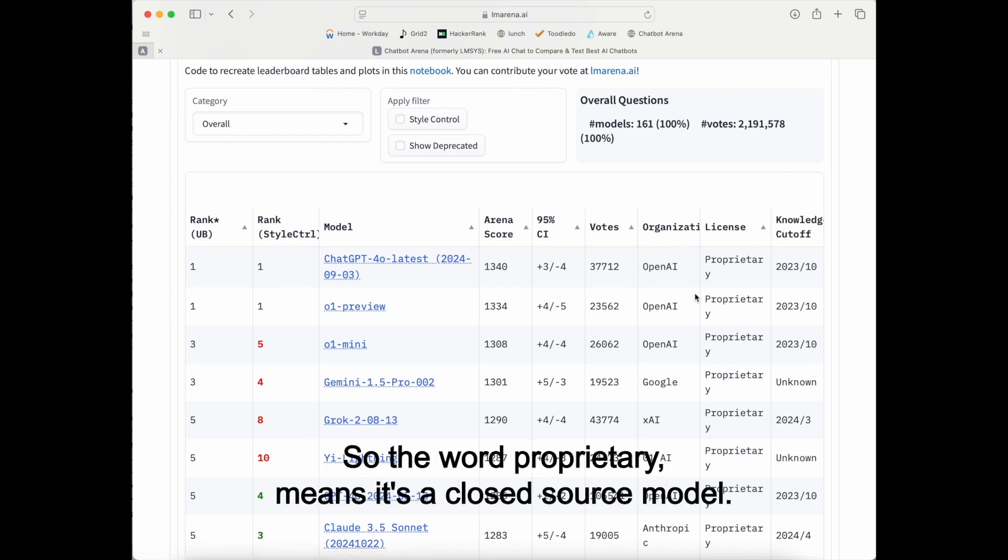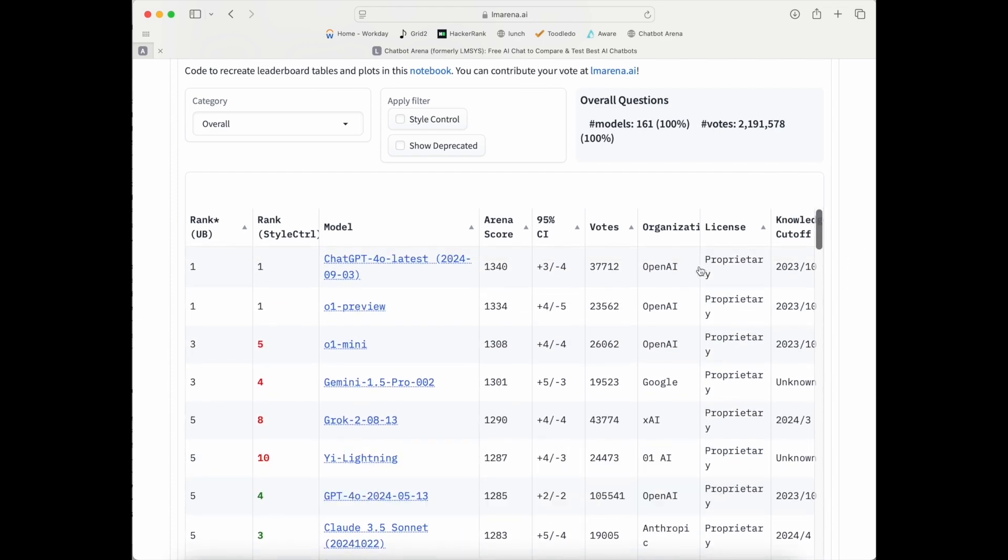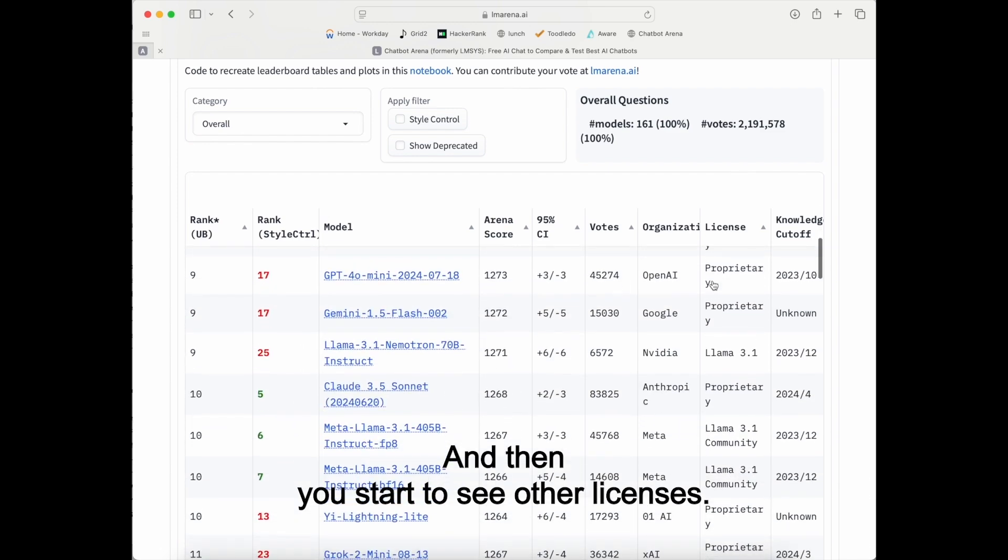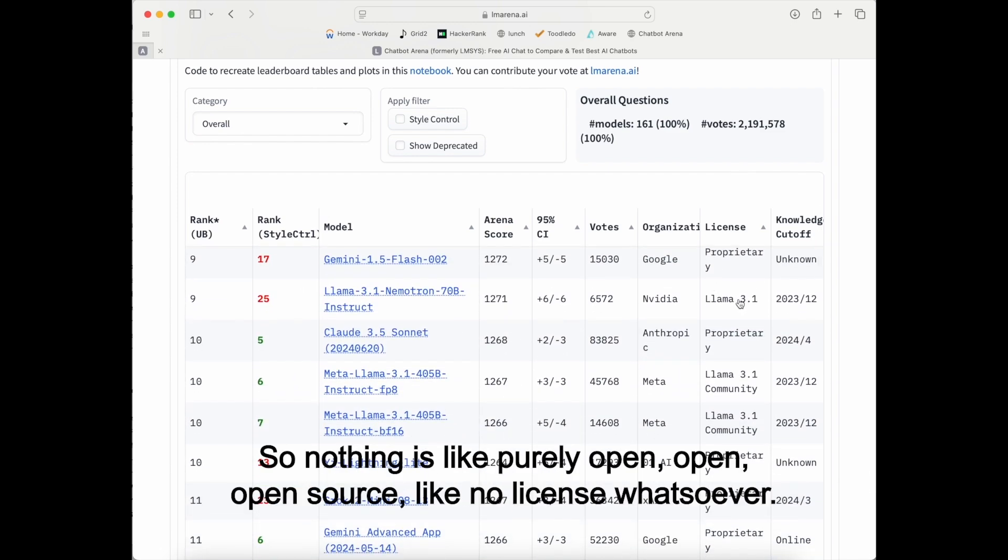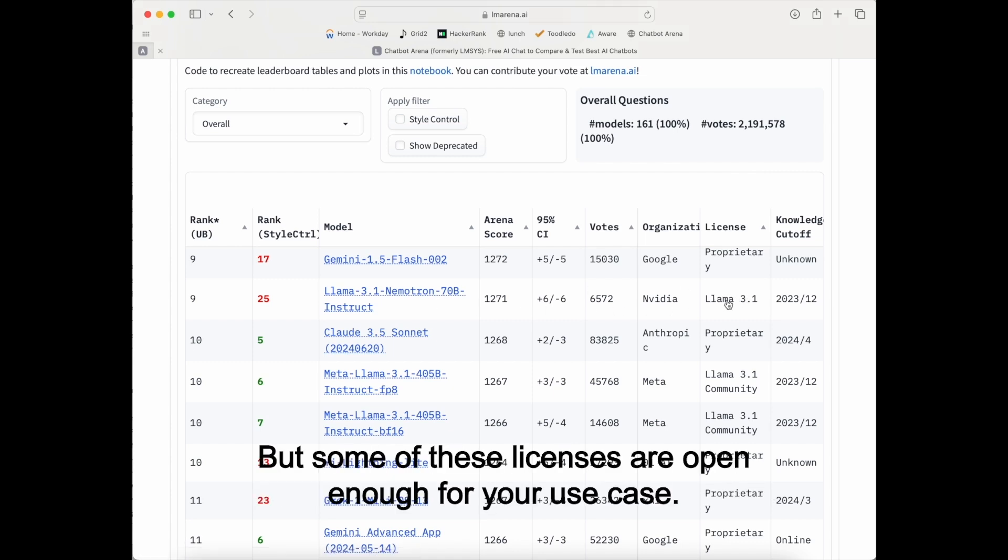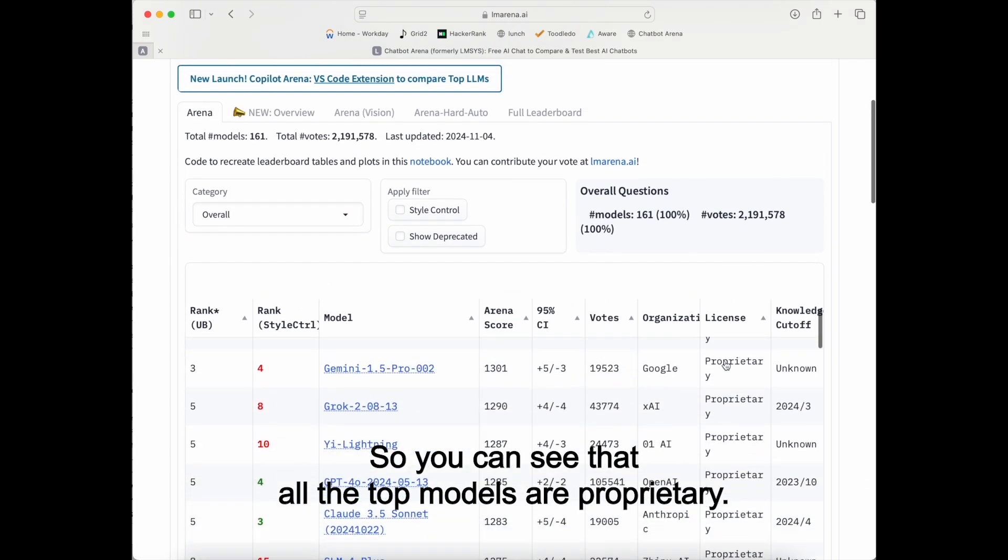So the word proprietary means it's a closed source model. And then you start to see other licenses. So nothing is like purely open, open, open source, like no license whatsoever. But some of these licenses are open enough for your use. Okay, so you can see that all the top models are proprietary.